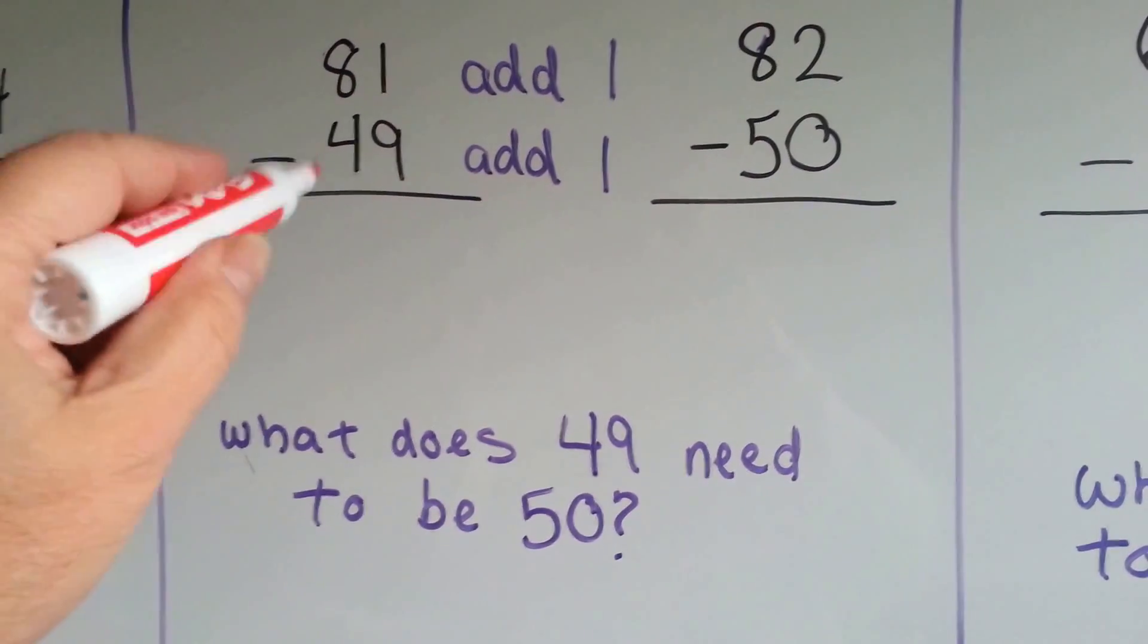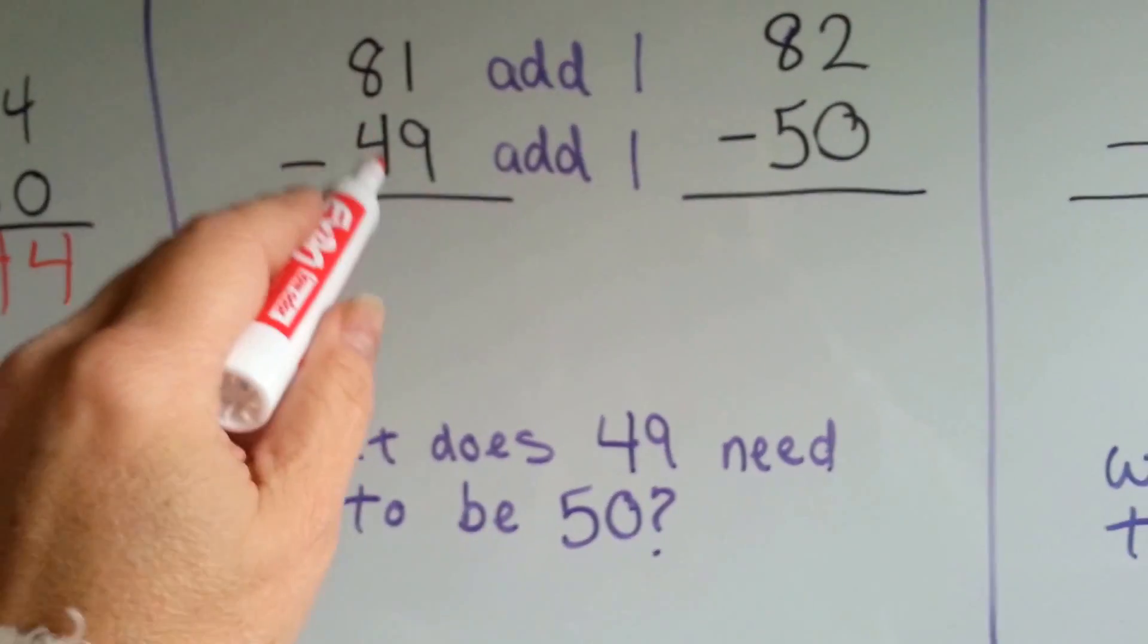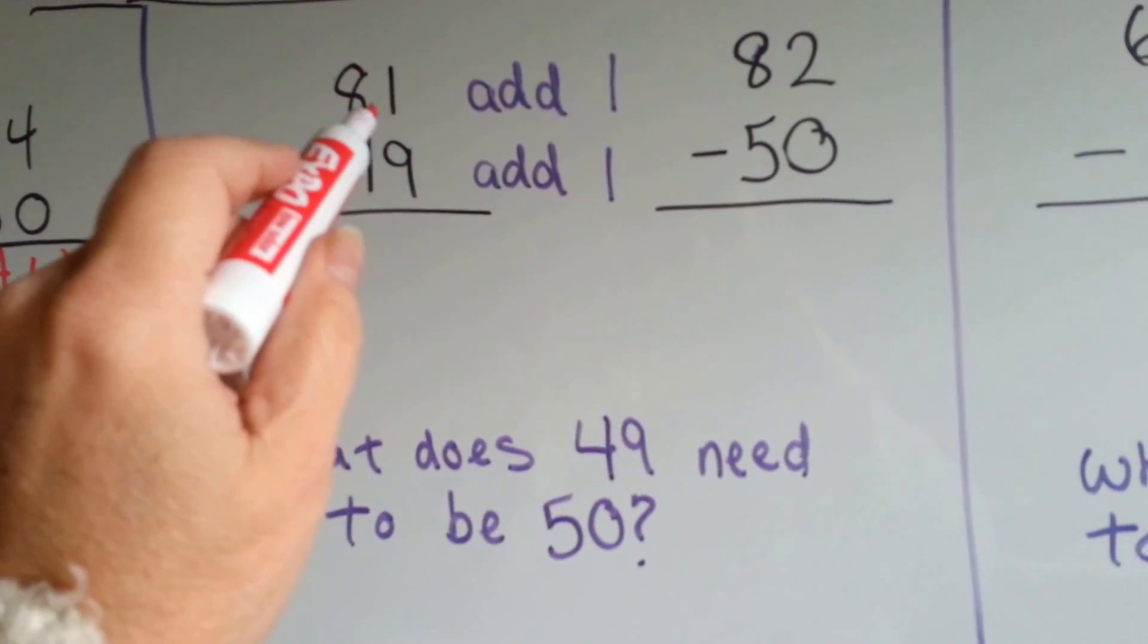What does this 49 need to be a 50, an easier number? It just needs one more. 49, 50. So we'll add one more to the 81.